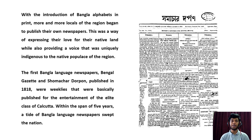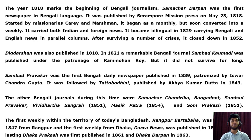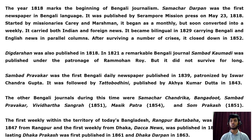The first Bangla language newspaper, Bengal Gazette, and Shamachar Dorpan, published in 1818, were weeklies basically published for the entertainment of the elite class of Kolkata. Within the span of five years, a tide of Bangla language newspapers swept the nation. The year 1818 marks the beginning of Bengali journalism. Shamachar Dorpan was the first newspaper in the Bengali language, published by Serampore Mission Press on May 23rd, 1818. Started by missionaries Carey and Marshman, it began as a monthly but soon converted into a weekly, carrying both Indian and foreign news. It became bilingual in 1829, carrying Bengali and English in parallel columns, before closing down in 1852.